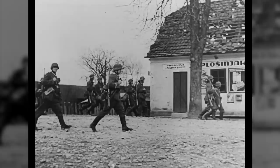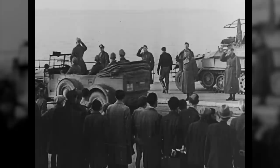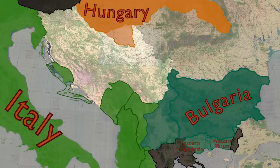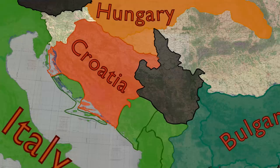After the invasion of Yugoslavia in April 1941, the Kingdom is carved up by four antagonists: Germany, Italy, Hungary, and Bulgaria. What was one country is now divided into nine different territories. Large parts are occupied or annexed, such as Slovenia by Germany and Italy, parts of Serbia by Hungary, and Macedonia by Bulgaria.